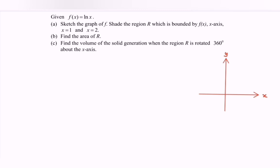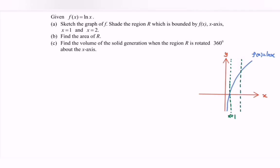Sketch the graph for ln x. So here we have f(x) which is equals to ln x. Shade the region R, which is bounded by f(x) — shown here in blue — the x-axis in red, and x equals to 1 and x equals to 2. So here we have x = 1, x = 2, and the shaded region R.